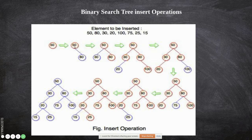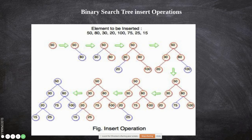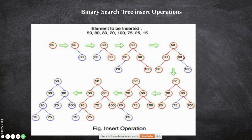The next element is 80. Since it is greater than the root node 50, it is inserted as the right child. Next comes 30 — since it is lesser than the root, it is inserted as the left child. Then 20 — we check with the root, it is less than 50 so we move left. At node 30, it is also less, so 20 is inserted as the left child of 30. Next, 100 is greater than 50, so we go right; at 80 it is also greater, so 100 is inserted as the right child of 80.